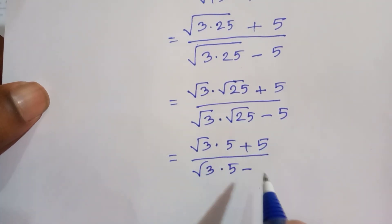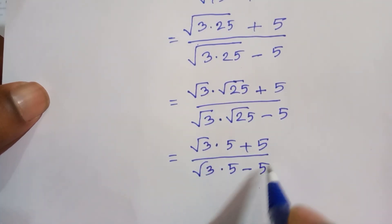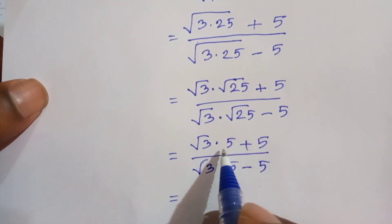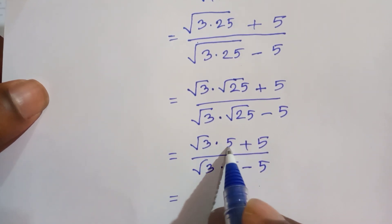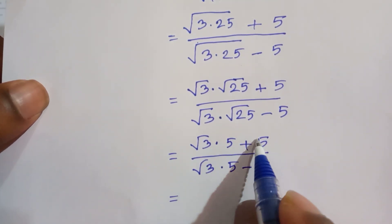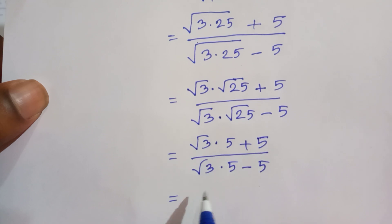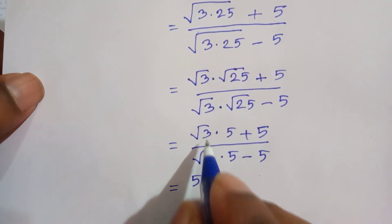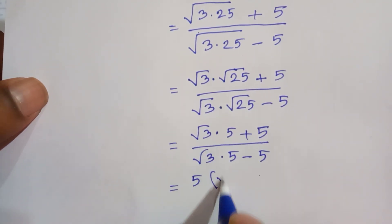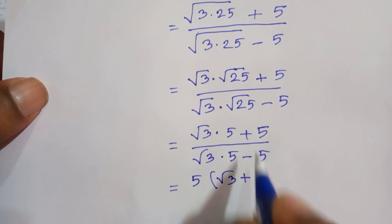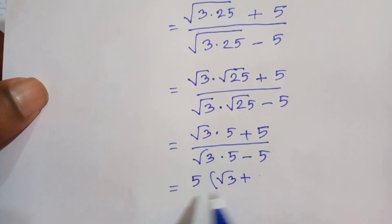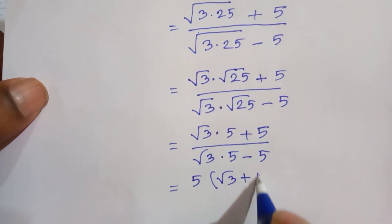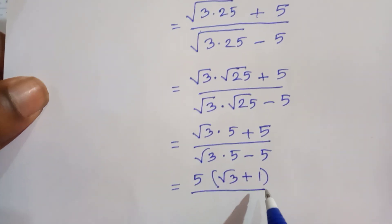If we look at these two terms, here we have 5 and here we have 5, so we take 5 as a common factor. This gives us 5 times (root 3 plus 1) in the numerator.